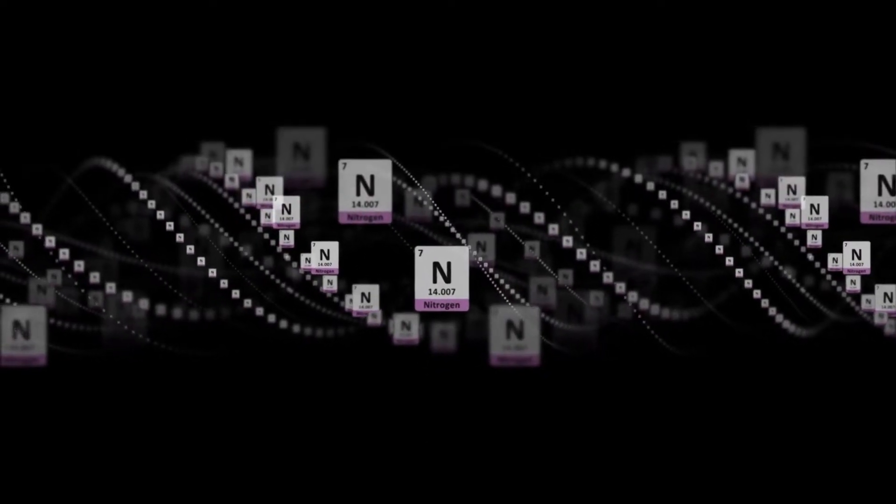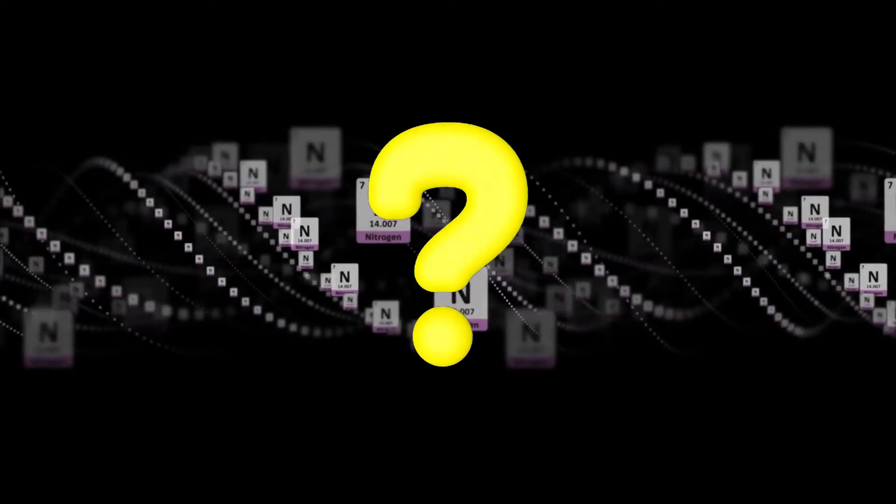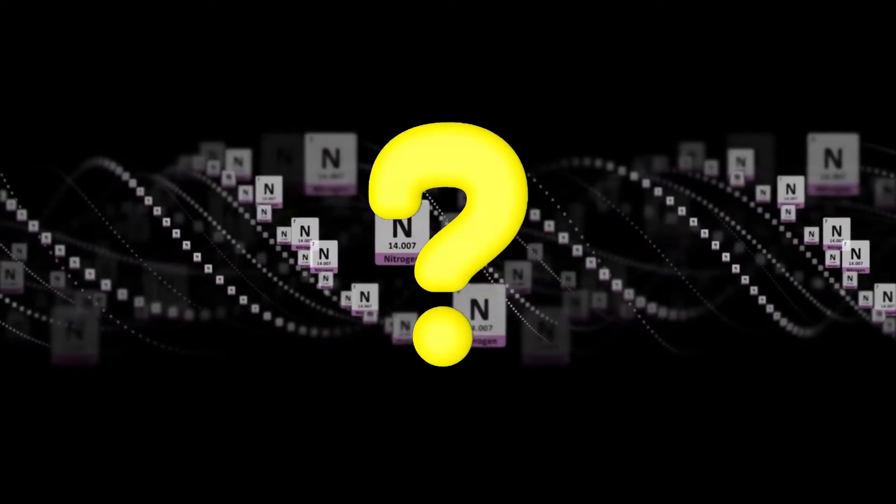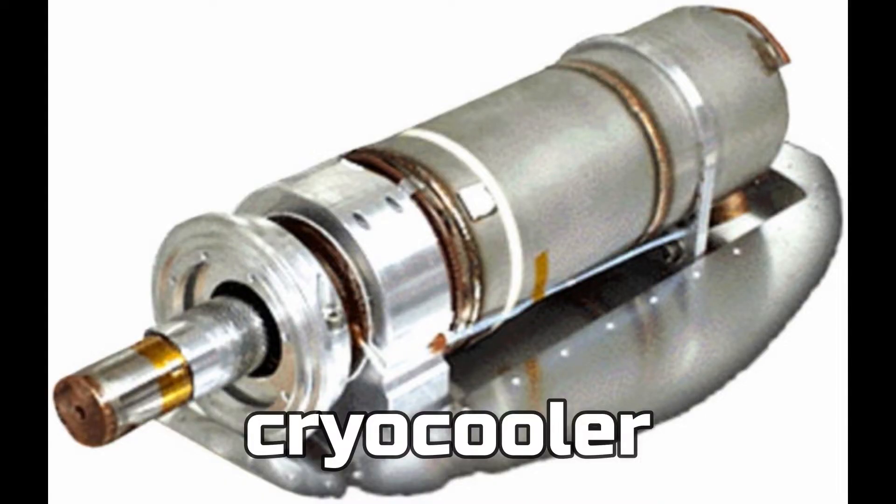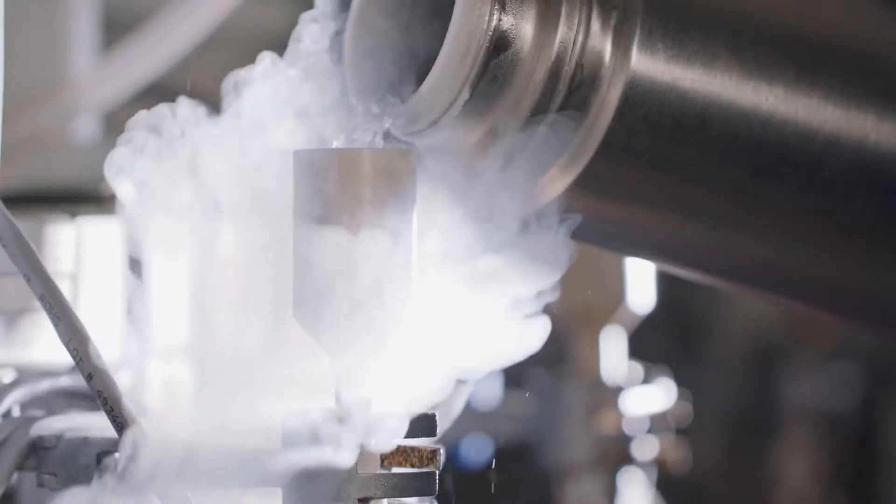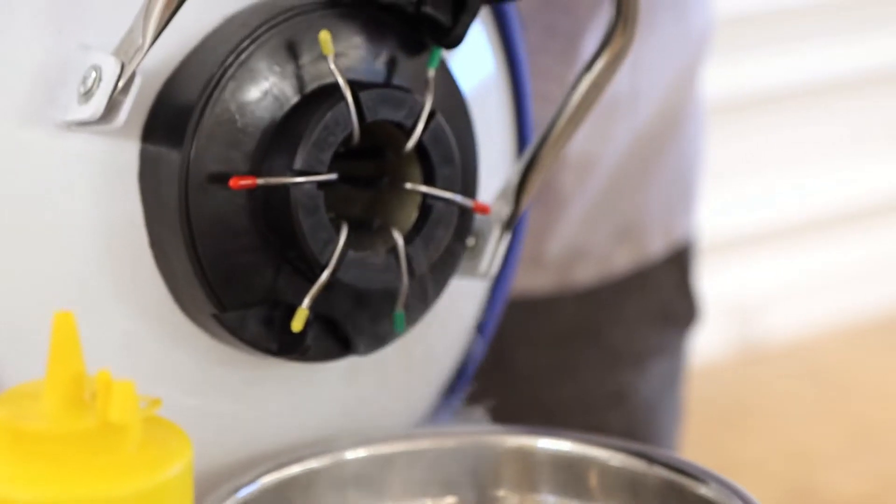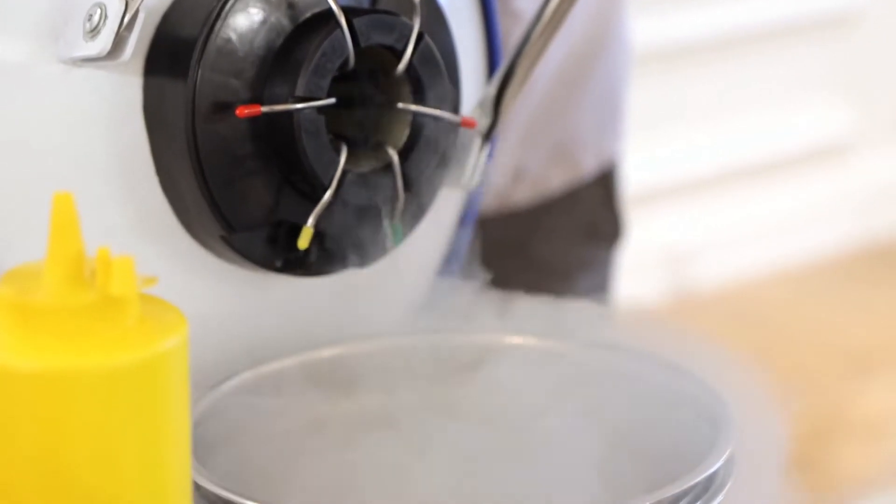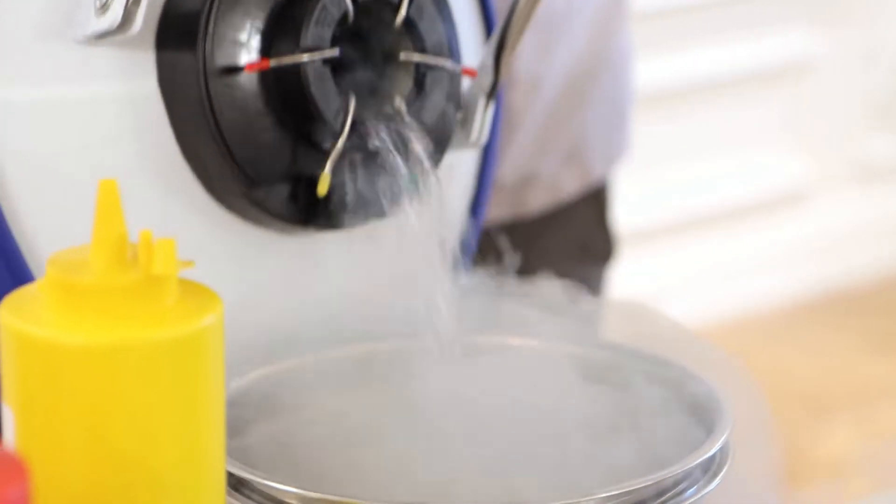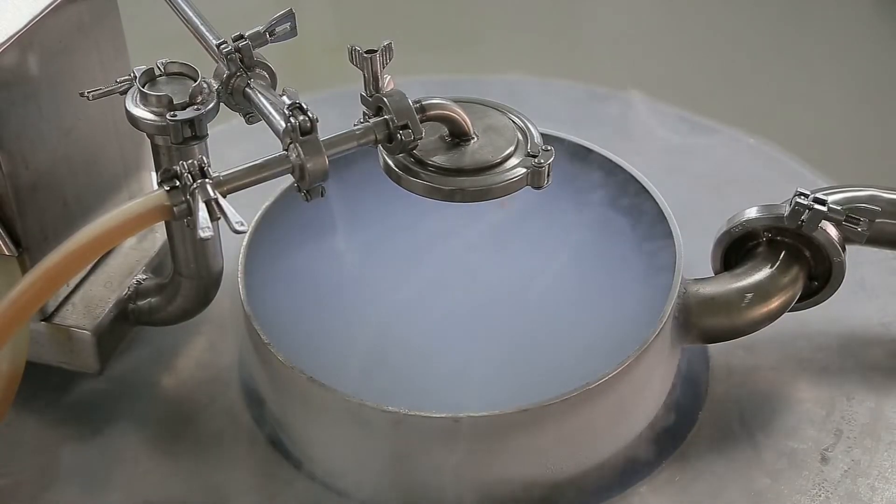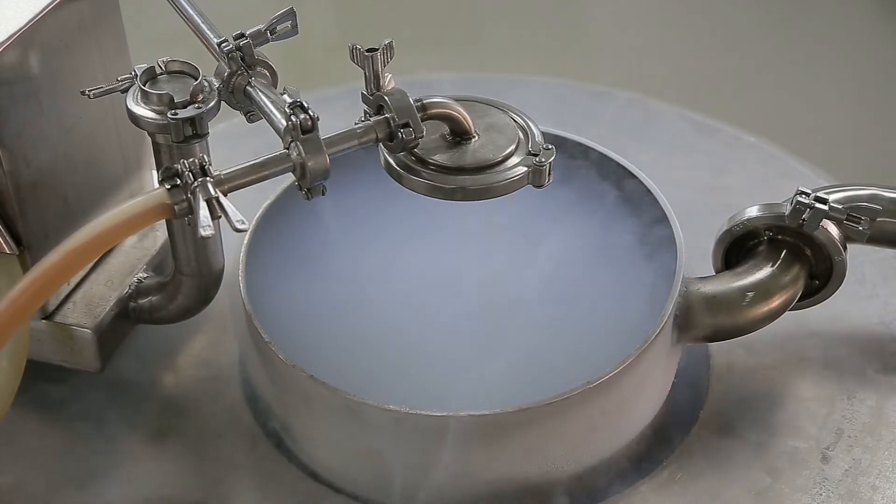So we got pure nitrogen. How do we turn it into liquid? We get back to the cryo-cooler. But instead of turning air into liquid, we turn pure nitrogen into liquid. Depending on the size of your machine, we could get liquid nitrogen from this.